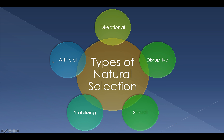There are really five methods of selection, and one of them is actually not natural, so we call it artificial. We're going to discuss them in this order: directional, disruptive, sexual, and stabilizing selection, and try to explain what those are and what they look like, with an example for each.